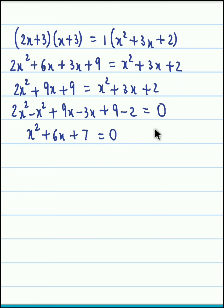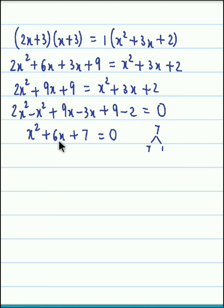Now we could try to factorize 7 — the factors would be 7 and 1 — but this doesn't work here. So we can't split the middle term. What we have to do is use the formula method.